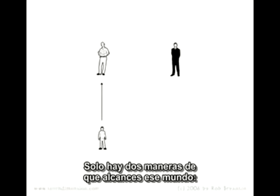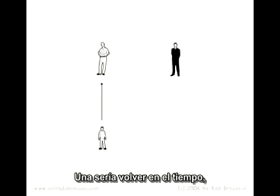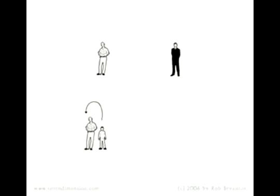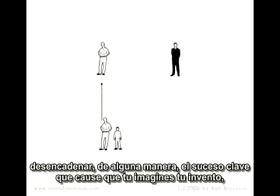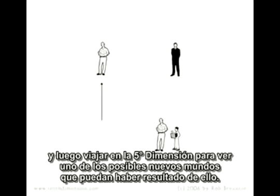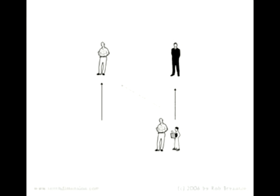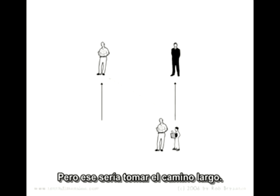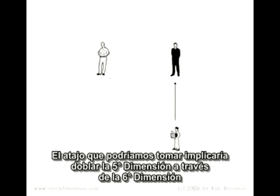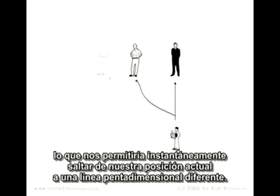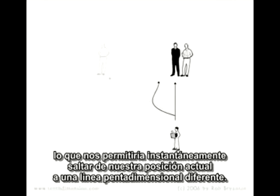There are only two ways you could get to that world. One would be to travel back in time, somehow trigger the events that caused you to come up with your invention, then travel forward in the fifth dimension to see one of the possible new worlds that might have resulted. But that would be taking the long way. The shortcut would involve folding the fifth dimension through the sixth dimension, which allows us to instantly jump from our current position to a different fifth-dimensional line.